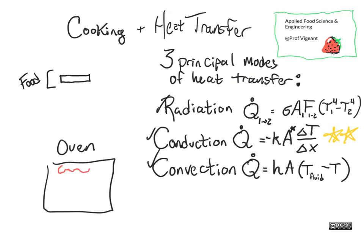Let's imagine we've got an oven that's electric, although this works just as well for a gas oven. We have an element that is red hot in the top and in the bottom, and in the middle we have the tray on which our food would rest.